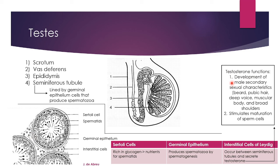The germinal epithelium lining the seminiferous tubules produces spermatozoa by the process of spermatogenesis. The interstitial cells of Leydig occur between the seminiferous tubules and secrete testosterone. The functions of testosterone include the development of male secondary sexual characteristics: growing a beard, pubic hair, deepening of the voice, a more muscular body, and broadening of the shoulders during puberty. Testosterone also stimulates the maturation of sperm cells.